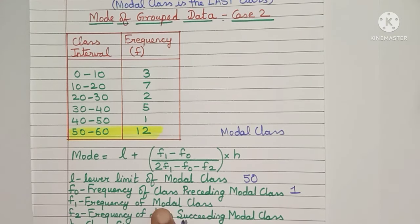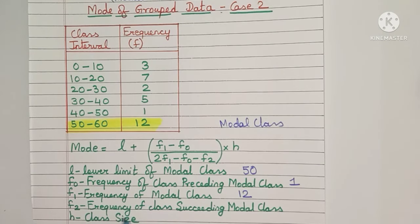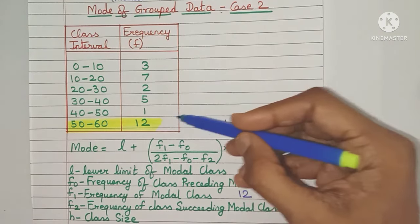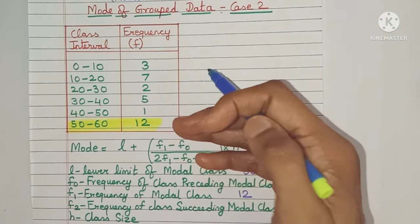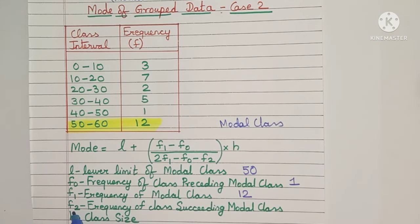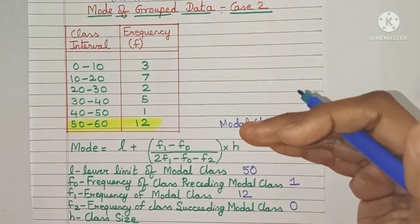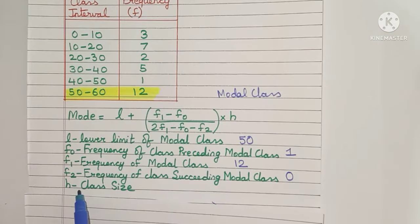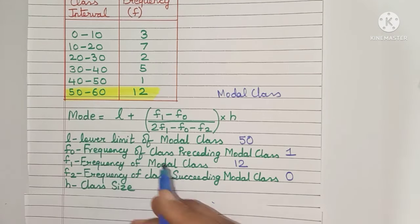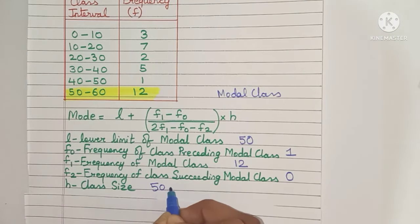F1 is the frequency of the modal class itself, which is 12. F2 is the frequency of the class succeeding the modal class. However, this is the last class, so there is no class after it. In such a case, you should take F2 as 0, because there is no class interval and its frequency must be 0. The class size H: taking 50 minus 40 gives H = 10.